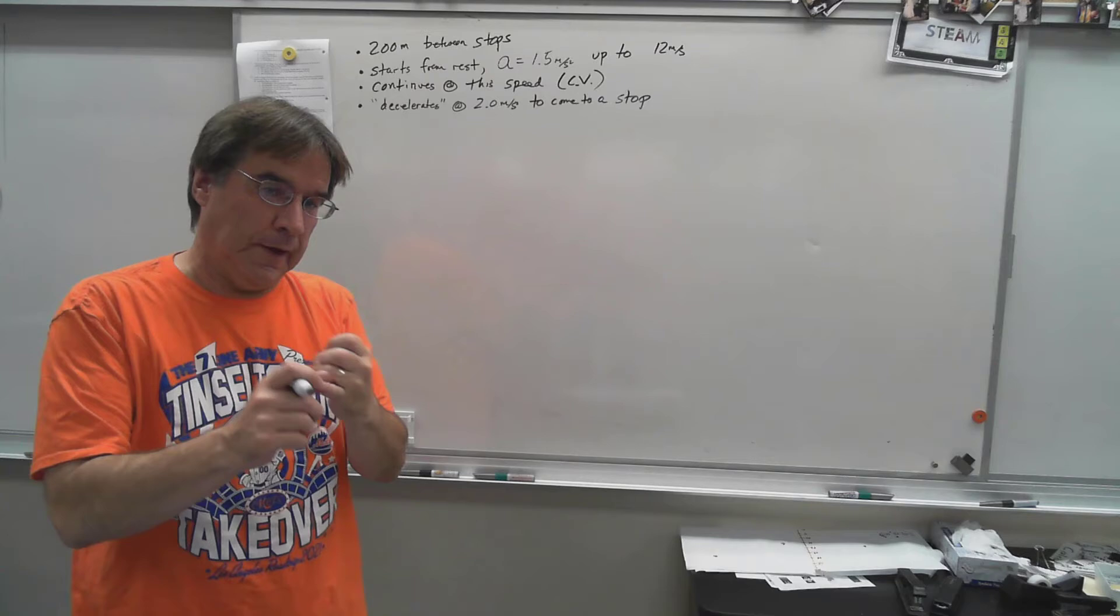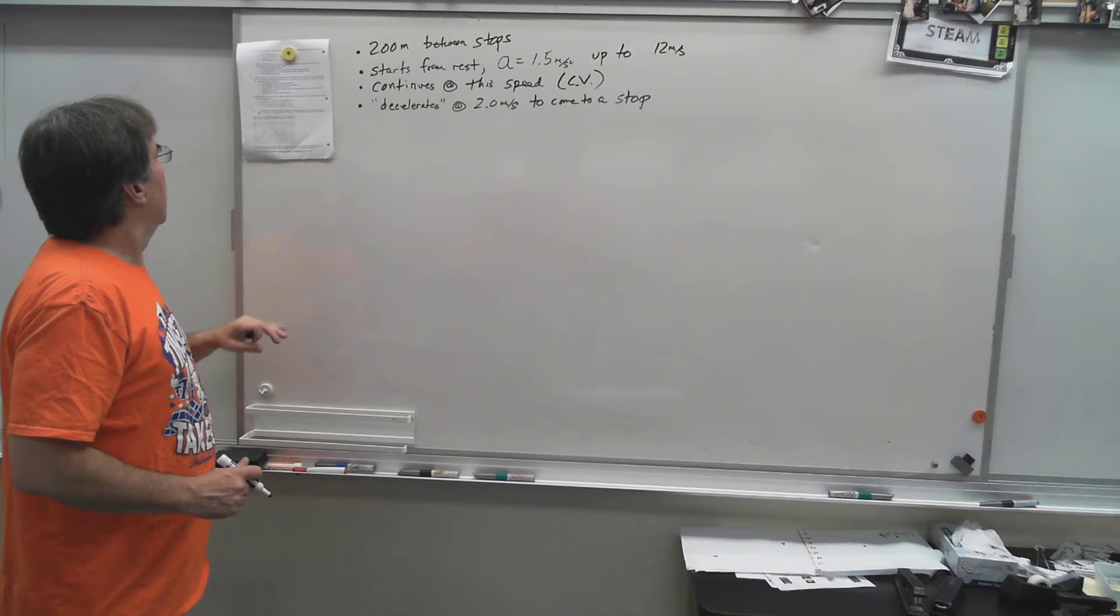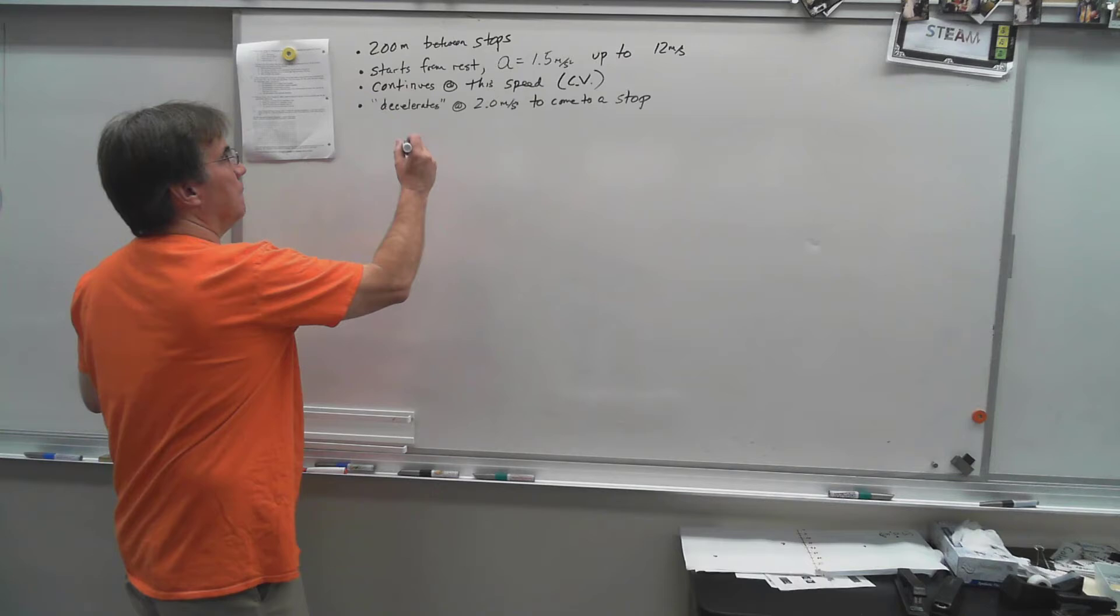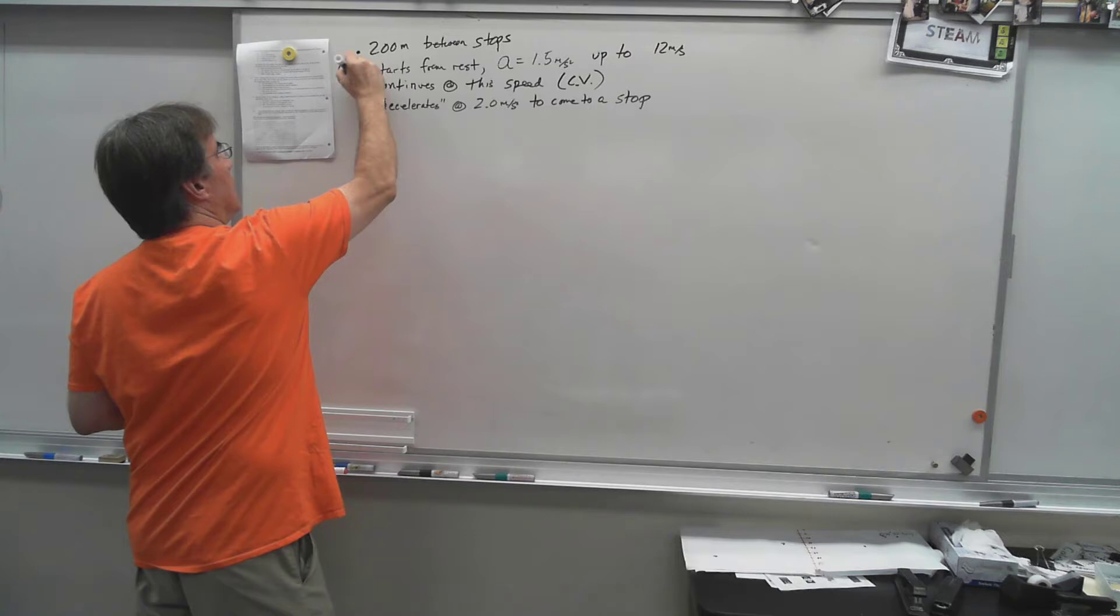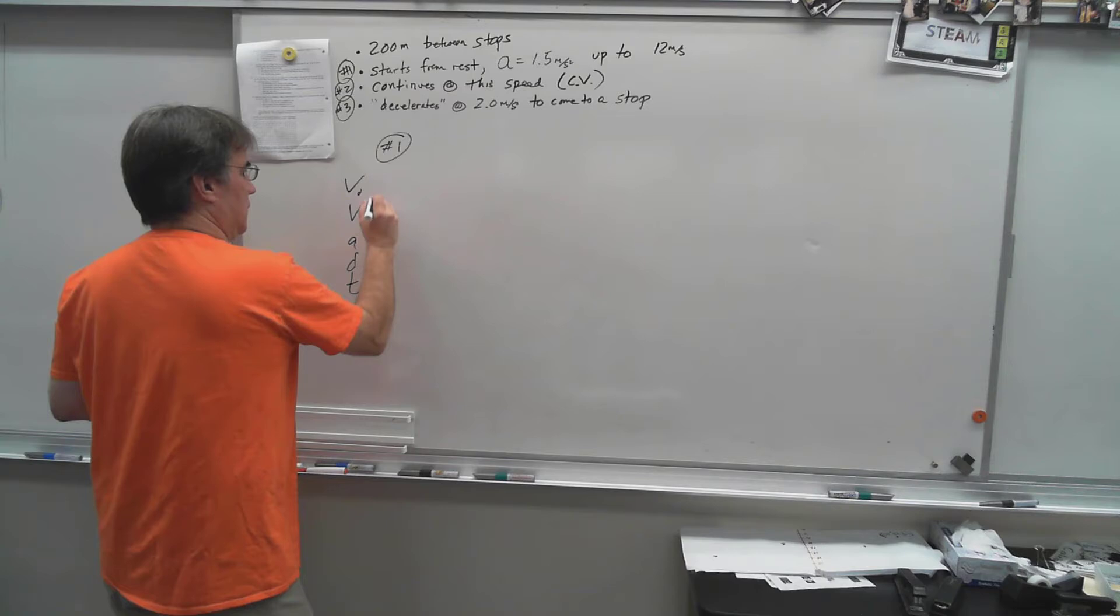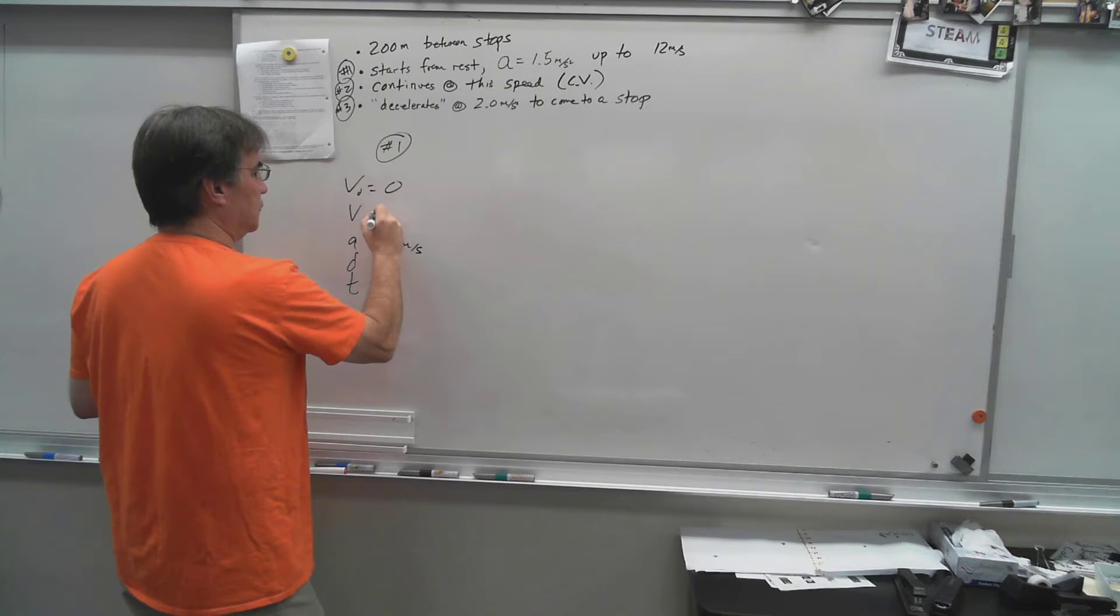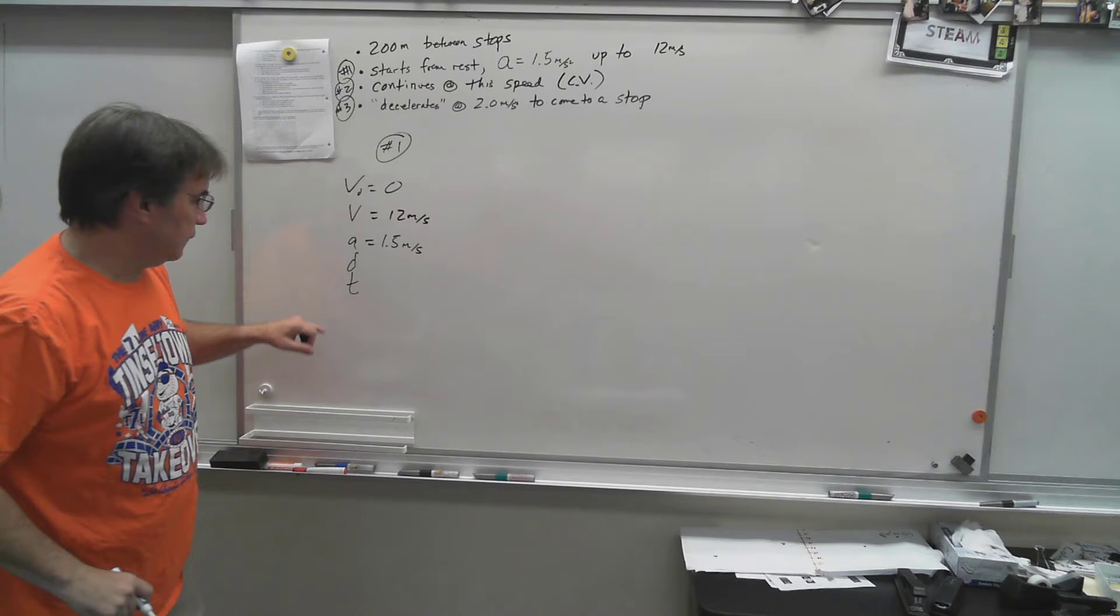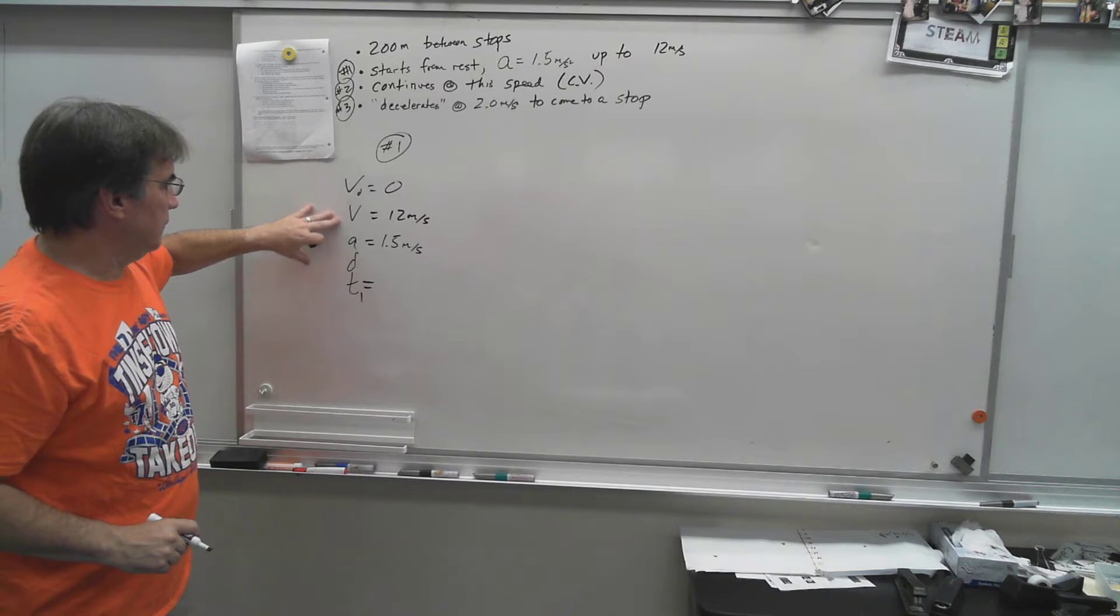The question asks you to find the total time, so we need time 1, time 2, and time 3 for each part of the journey and they want us to graph it. We'll call motion number one, motion number two, and motion number three. Number one, you start from rest and accelerate at 1.5 meters per second squared up to 12 meters per second.